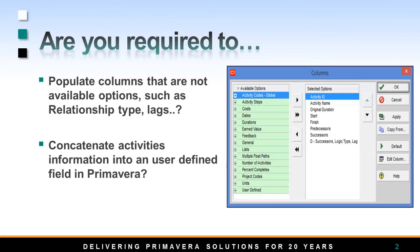If we look at the activity window in Primavera, we certainly know that there are some columns of information that we could bring for customizing layouts, but not all of the fields are available — for instance, relationship type and lag. This raises the question: how can we manipulate data in ways that are useful for the project management team or for project managers that work within Primavera?